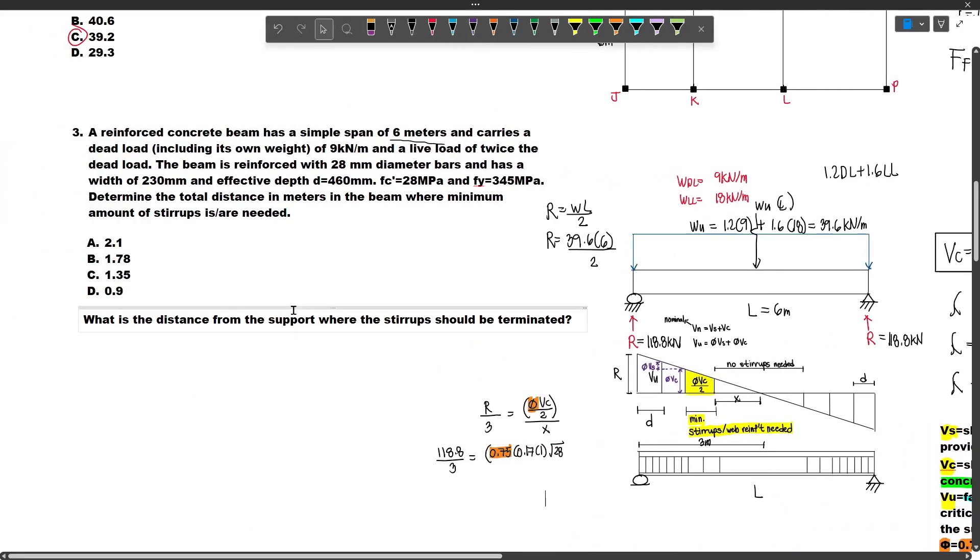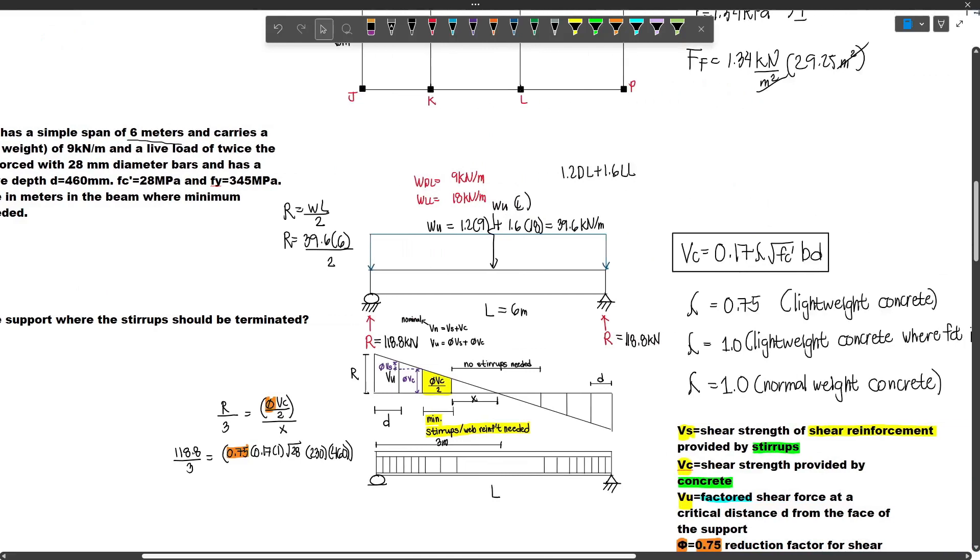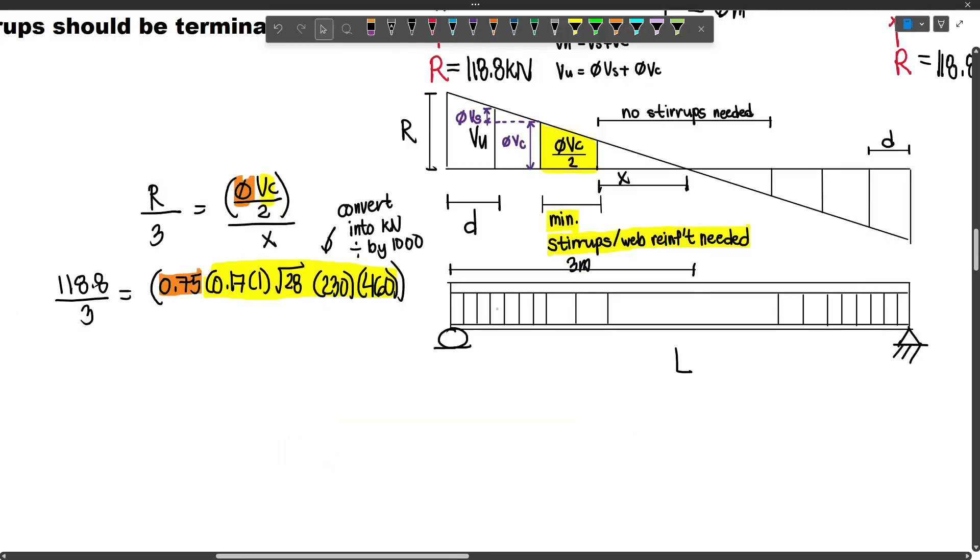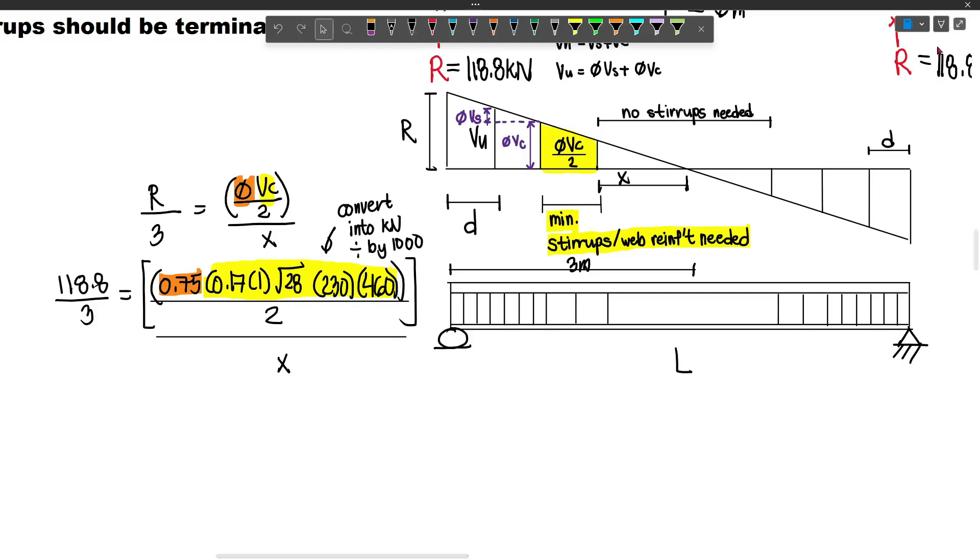Then square root of fc'. Our fc' is 28, so this will be square root of 28 multiplied by b times d. Let's check our b and d values. Our b is the width of the beam, so 230. And our d is 460. So this is our expression for phi VC. Divide this by 2 and put it over X. Convert this to kN by dividing by 1,000 because we're using fc' in N/mm² and these two dimensions are in mm. Input this into the calculator to solve for X.